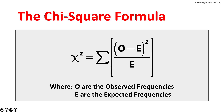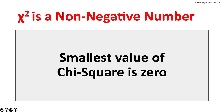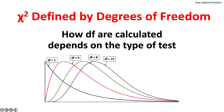The smallest possible value of Chi-square is zero. A Chi-square score of zero means the observed frequencies are identical to the expected frequencies. Chi-square is defined by degrees of freedom, and how degrees of freedom are calculated depends on the type of Chi-square test. As the degrees of freedom increase, the distribution becomes less skewed to the right.